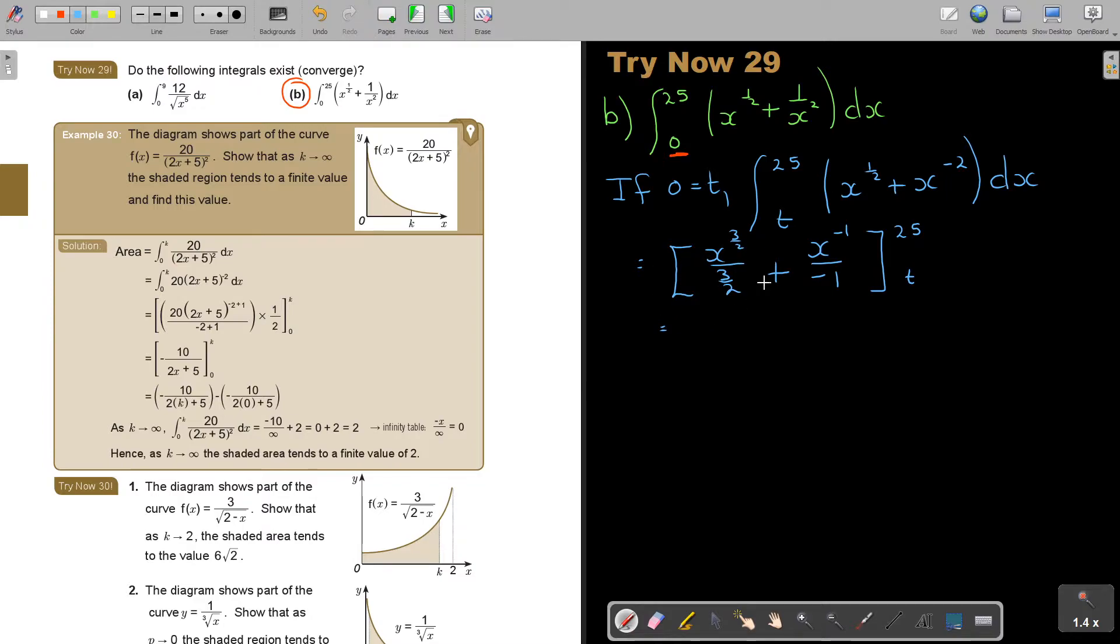Now, I prefer to just simplify before I do the substitution, so this is 2 over 3 if I multiply the reciprocal. And I think it's best if I take this back to the root, and there's the square, so minus, and this is going to be 1 over x, evaluated from T to 25.